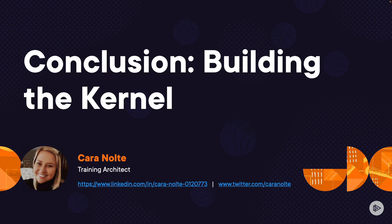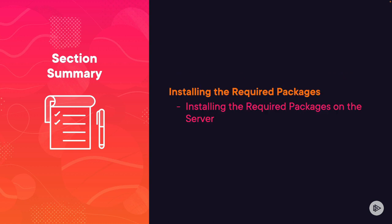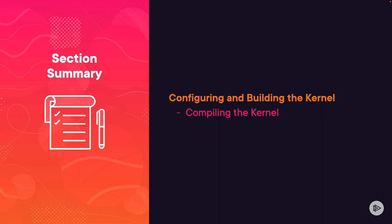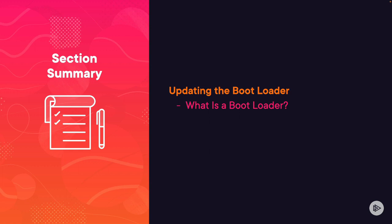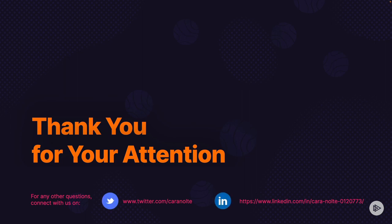Hello, and welcome to this section conclusion on building the kernel. In this section, we talked about downloading and extracting the source code, including what source code is and how to download and extract it. Next, we installed the required packages for our kernel build. Then we configured and built the kernel — compiling and installing it. Then we updated the bootloader with update-grub, and finally we verified the environment by rebooting the server and using the uname command to verify the updated kernel version.